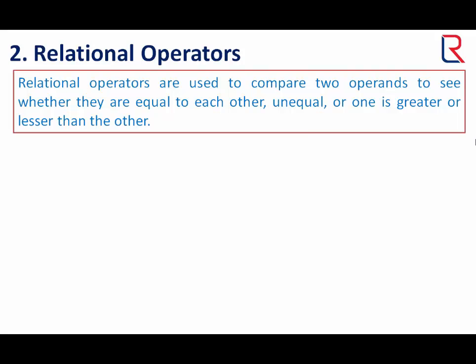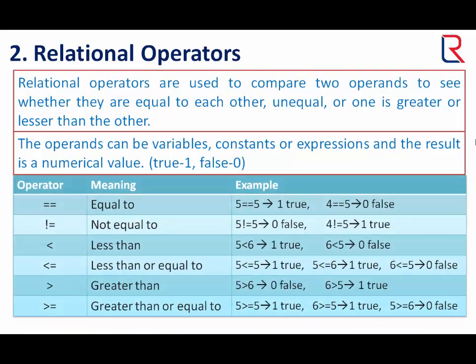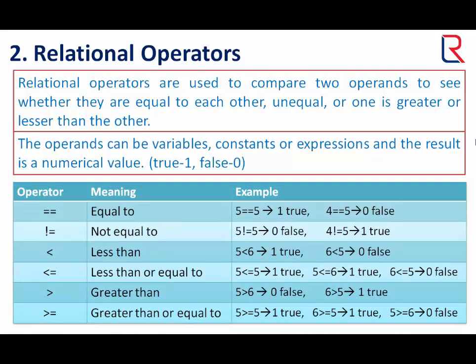Now let's see the relational operators. Relational operators are used to compare two operands to see whether they are equal to each other, unequal, or one is greater or lesser than the other. The operands can be variables, constants, or expressions, and the result is a numerical value — one for true, zero for false. The operators are: double equal sign for equal to, exclamation-equal sign for not equal to, and less than, less than or equal to, greater than, and greater than or equal to.